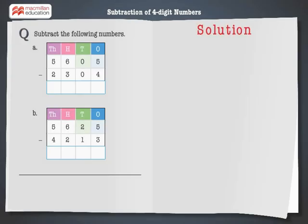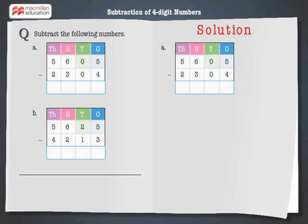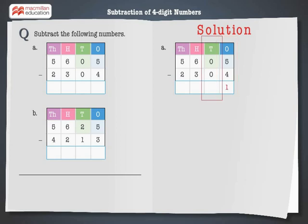Let's solve the first problem: 5,605 minus 2,304. Subtract the ones — 5 minus 4 is equal to 1. Next, subtract the tens — 0 minus 0 is equal to 0.